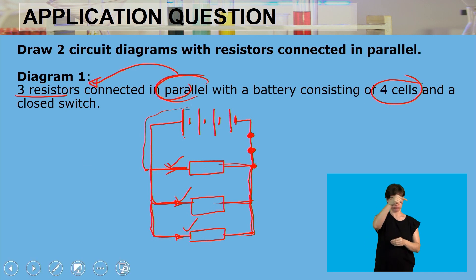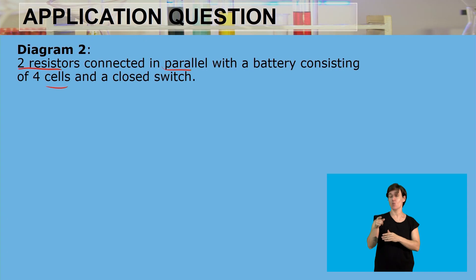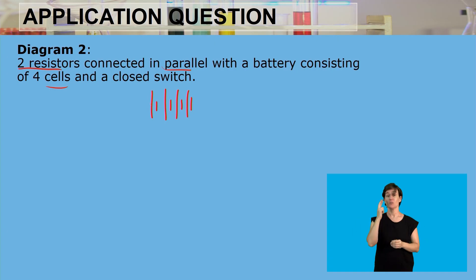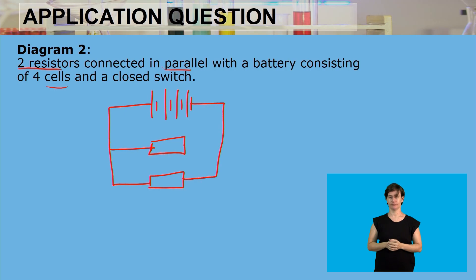For Diagram 2, we draw two resistors connected in parallel, still with four cells and a closed switch. The battery has four cells, and now there are two resistors connected in parallel, along with a switch.